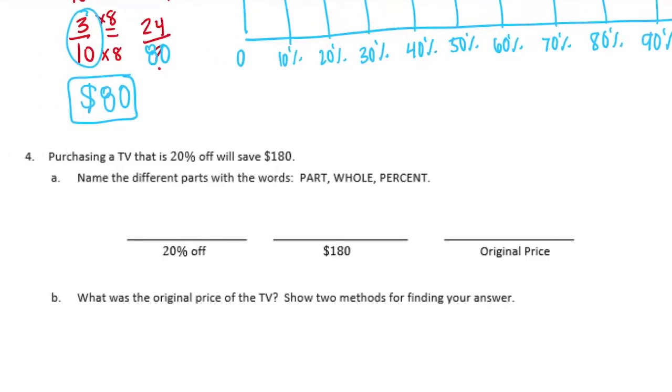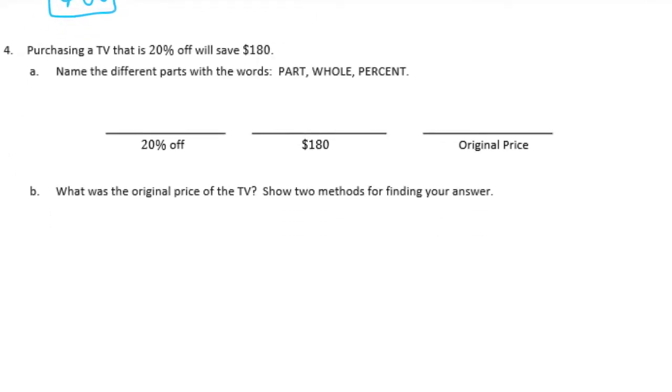Number 4. Purchasing a TV that is 20% off will save $180. Name the different parts with words. Part, whole, percent. So 20% off, well it kind of tells us percent right there, so this is the percent. $180 is how much we're going to save, so that's the part. And then the whole would be the original price. What was the original price of the TV? Show two methods for finding your answer.